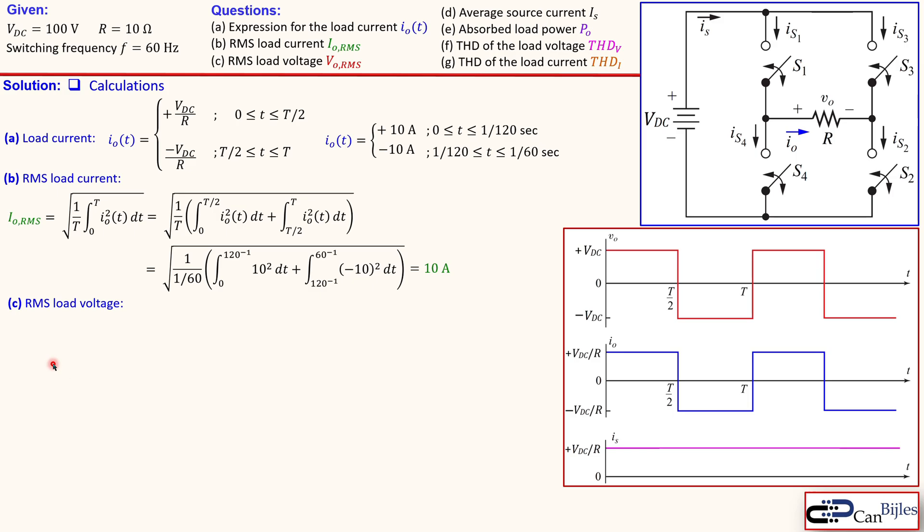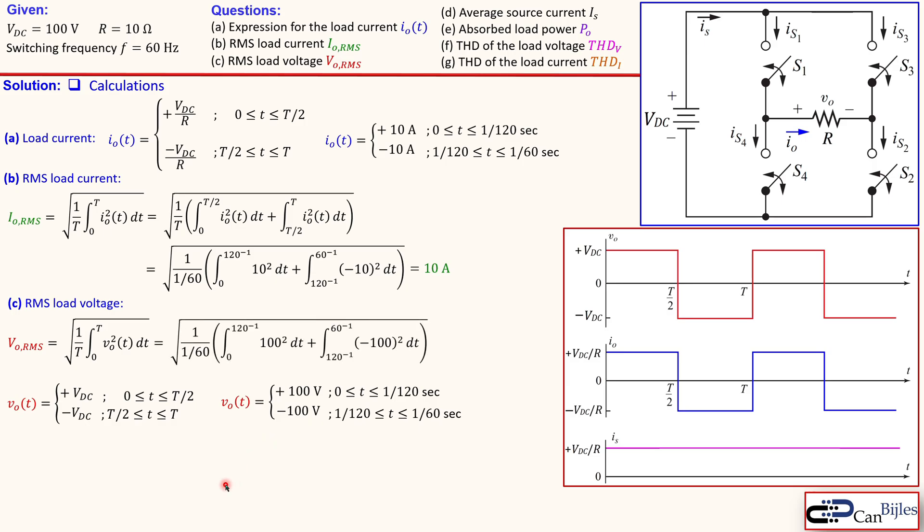Now for the RMS load voltage in a similar form, you can calculate it like so. You go in the similar form as we did for the RMS load current. Now it is VDC or minus VDC. Again, looking from the graph and we define it for the specific parts of the period. And then substitute that in this expression for 100 and minus 100. And you get actually here this value and that will be then 100 volts. So that is question C.